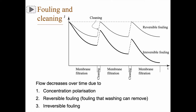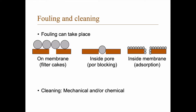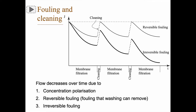This course is not very advanced, but we need to talk about fouling and cleaning. When you use a membrane, the flux will decrease over time. This decrease happens due to concentration polarization, which is inevitable, and it also happens because of reversible fouling — fouling that washing can remove, for example a cake that builds up — and also through irreversible fouling, which is fouling we can't remove with any kind of cleaning.